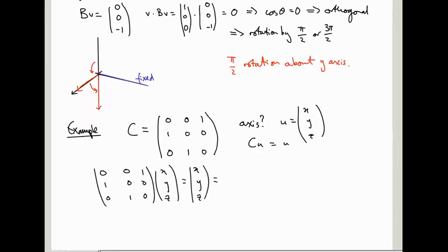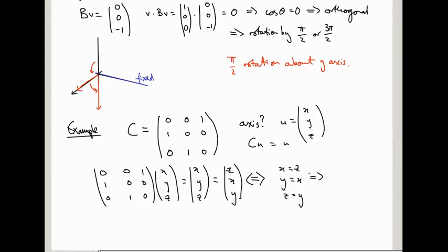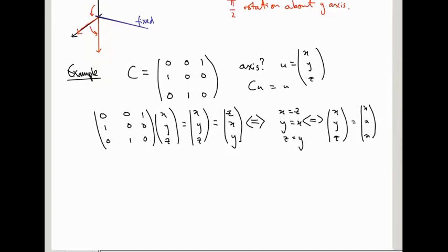Multiplying C into (x, y, z) gives (z, x, y). Setting this equal to (x, y, z) gives three equations: x = z, y = x, and z = y. So all three numbers x, y, z must be equal, making the third equation redundant. The solution is (x, x, x), meaning the axis points in the direction (1, 1, 1).